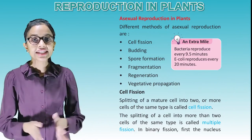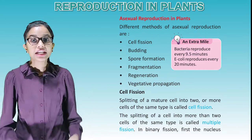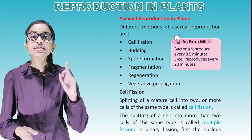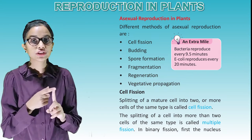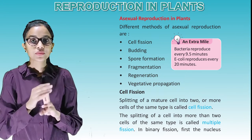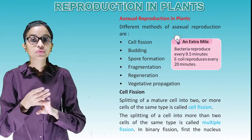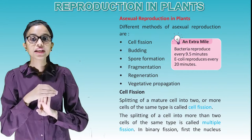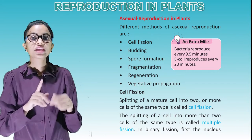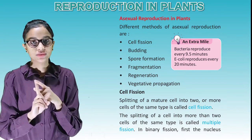Different methods of asexual reproduction are: cell fission, budding, spore formation, fragmentation, regeneration, and vegetative propagation.